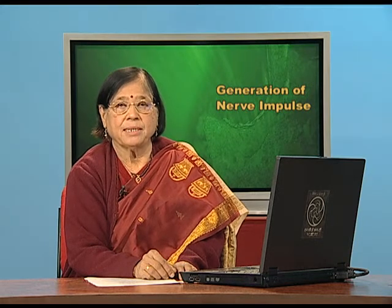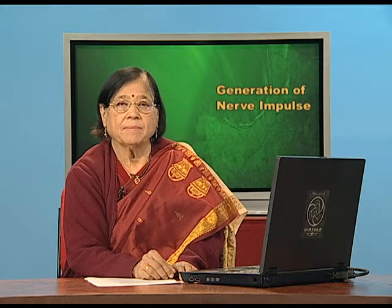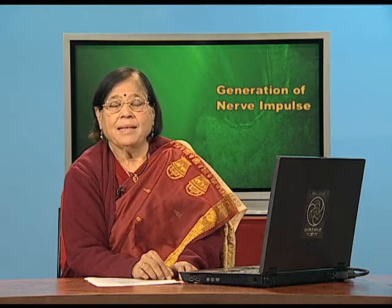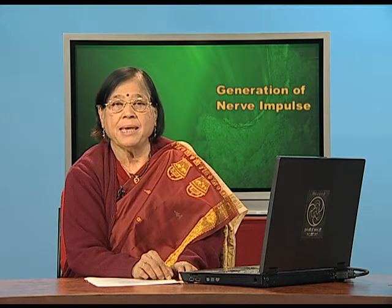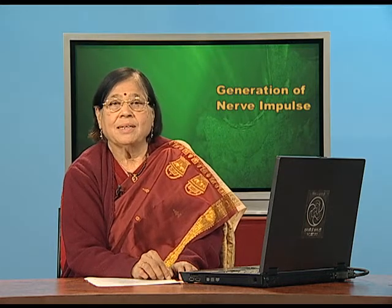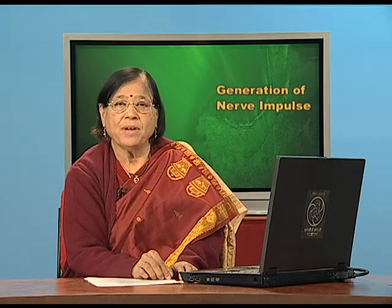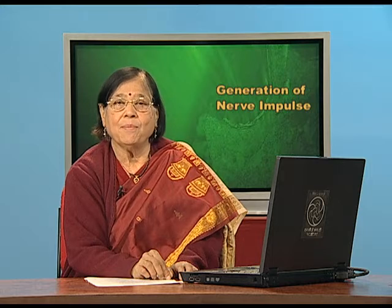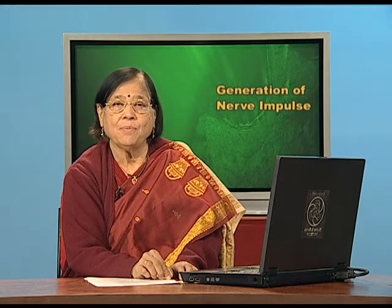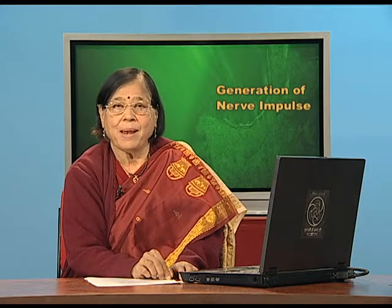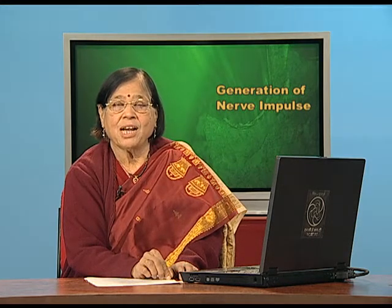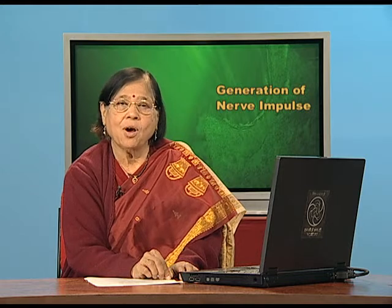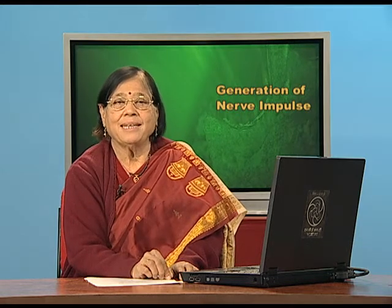This impulse has to move forward. When it moves from point A to point B, the same thing happens at point B: positively charged ions move in and negatively charged ions move out. But outside the membrane the movement is from B to A, and inside it is A to B. The circuit is completed, so the outer membrane at B becomes negatively charged and the inner membrane positively charged, and point A returns to normal — positive outside, negative inside.